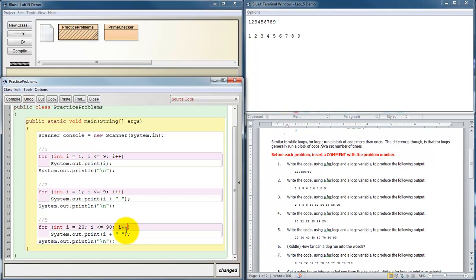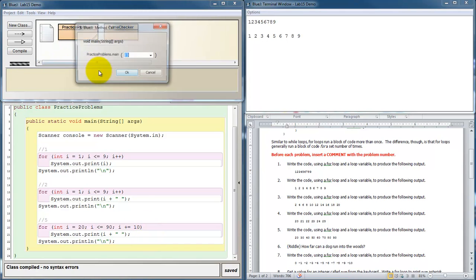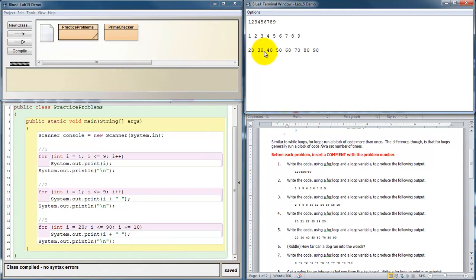And how much do we want i to change each time? We don't want it to go up by 1. We could say let's keep changing i so that every time we loop i goes up by 10. So I can write i equals i plus 10 or I can use my special assignment operator i plus equals 10. Let's take a look at that. Compile. Run. And there we go. 20, 30, 40, 50, 60, 70, 80, 90.